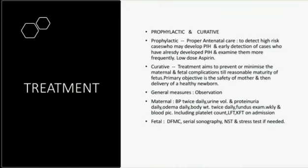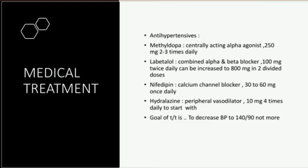Medical treatment — antihypertensive drugs of choice. Four groups are used: number one is methyldopa, a centrally acting alpha agonist, dose 250 mg two to three times daily. Then labetalol — combined alpha and beta blocker — 100 mg twice daily, can be increased up to 800 mg in two divided doses. Then nifedipine — calcium channel blocker — sustained release 30 to 60 mg once daily. Then hydralazine — peripheral vasodilator — 10 mg four times daily to start, can be increased to 10–25 mg BID.